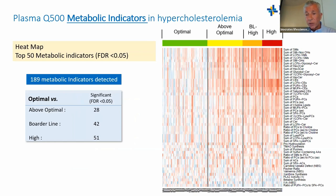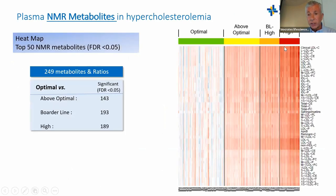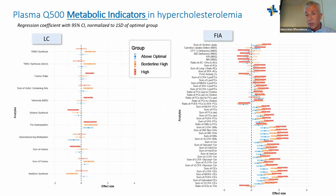Metabolic indicators again show a similar pattern — a very high number of altered indicators in the very high LDL-C group, as well as in the borderline high and above-optimal groups. Forest plots for both the LC small metabolites and FIA lipid fractions show marked changes, including significant alterations in sphingomyelins and ceramides.